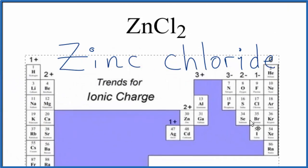If we look at the periodic table here, we can see zinc right here. It is a transition metal. And in general, for transition metals, we don't know the ionic charge. We have to look at what they're bonded to.